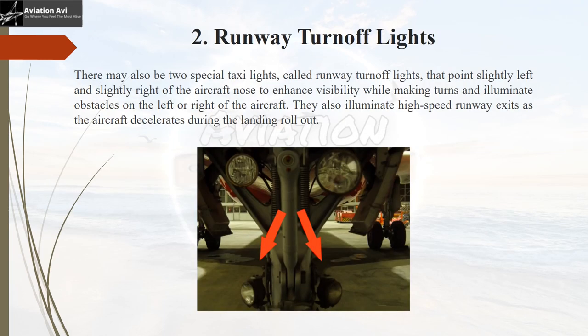Second are the runway turn off lights. These are special taxi lights that point slightly left or slightly right of the aircraft nose to enhance visibility while making turns and illuminate obstacles on the left or right side. They also illuminate high-speed runway exits such as rapid exit taxiways as the aircraft decelerates during landing rollout.